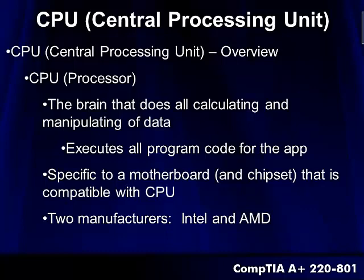That brain, that CPU, is specific to the motherboard and the chipset. We saw quite a bit of that in our previous section on motherboards. Now we've left the motherboards and we're stepping square into CPU — Central Processing Unit — in a lot more detail. Remember, the CPU is specific to each motherboard and chipset. There are two manufacturers of processors: Intel and AMD. Having two competitors who both make very good products keeps this industry moving along.